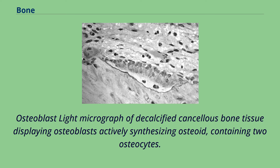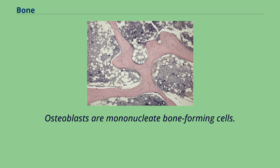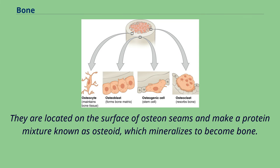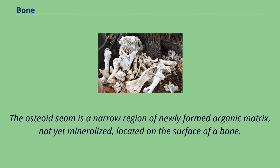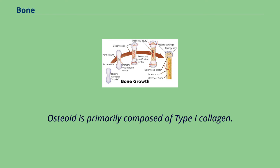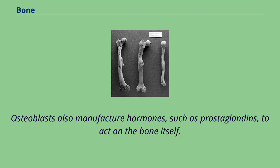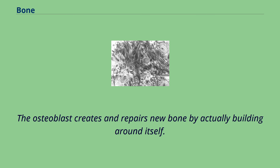Osteoblasts are mononucleate bone-forming cells. They are located on the surface of osteon seams and make a protein mixture known as osteoid, which mineralizes to become bone. The osteoid seam is a narrow region of newly formed organic matrix, not yet mineralized, located on the surface of a bone. Osteoid is primarily composed of type I collagen. Osteoblasts also manufacture hormones, such as prostaglandins, to act on the bone itself. The osteoblast creates and repairs new bone by actually building around itself.